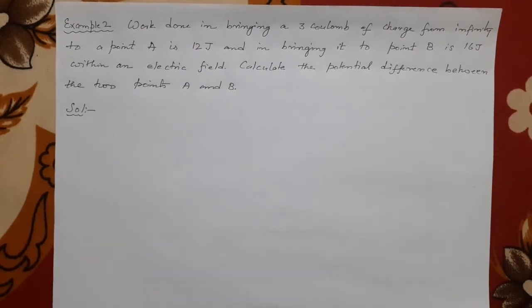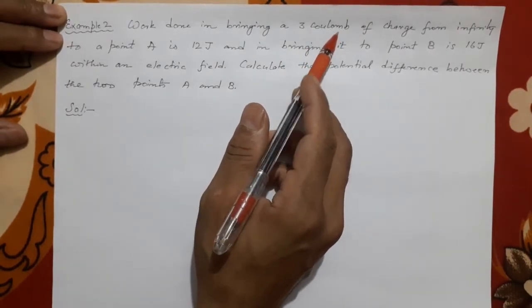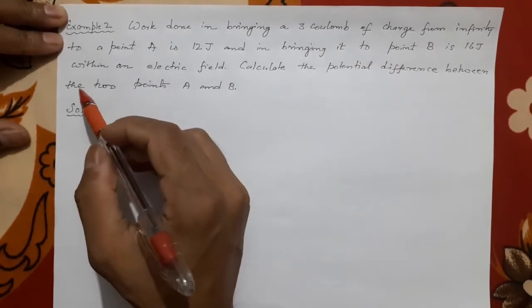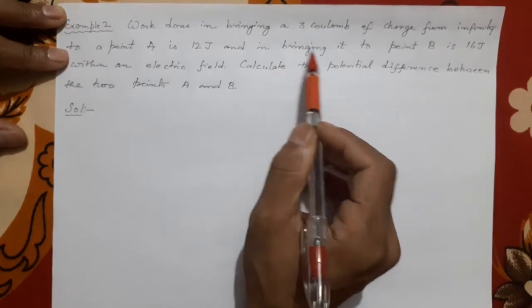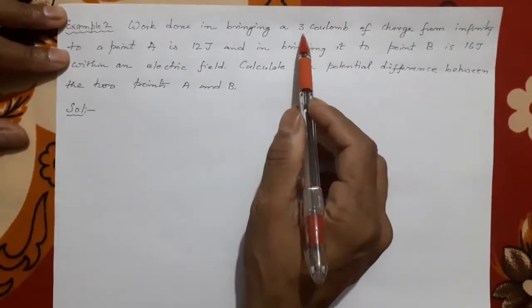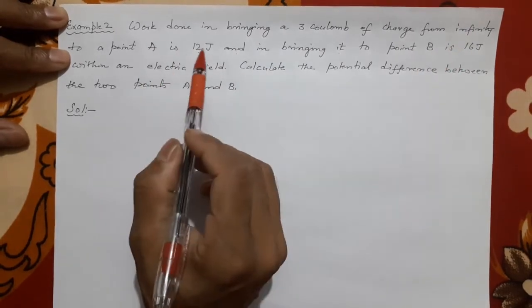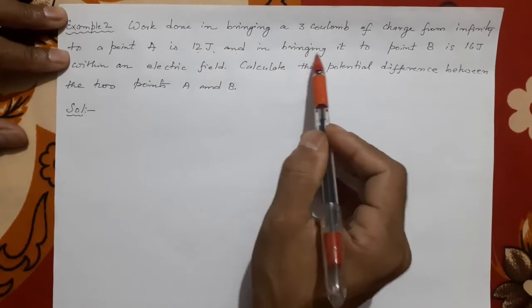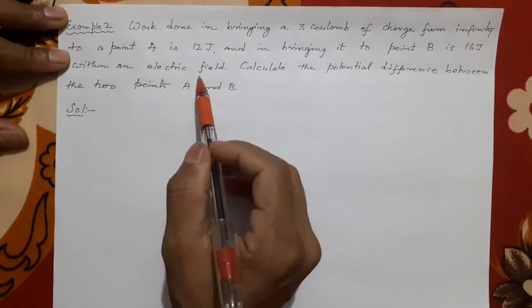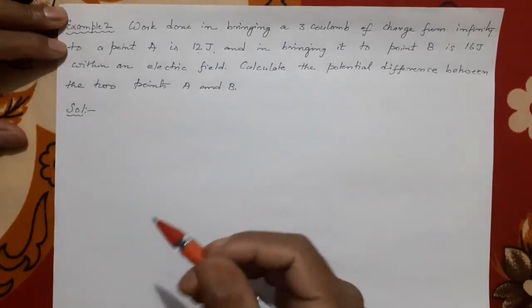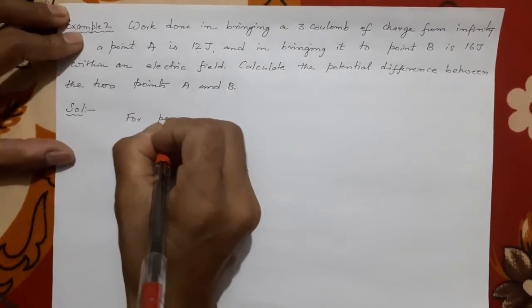This is the second question. Work done in bringing a 3 coulomb charge from infinity to point A is 12 joule. Then, in bringing the same 3 coulomb charge from infinity to point B, the work done is 16 joule within an electric field. You have to calculate the potential difference between the two points. To do this, find each potential separately and then subtract.